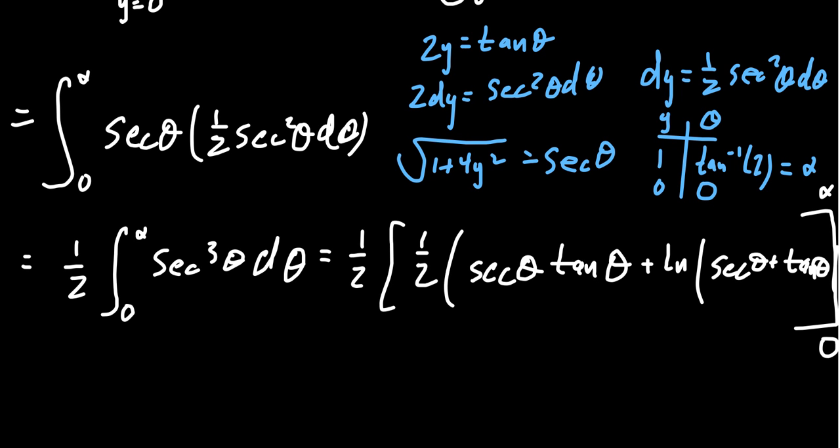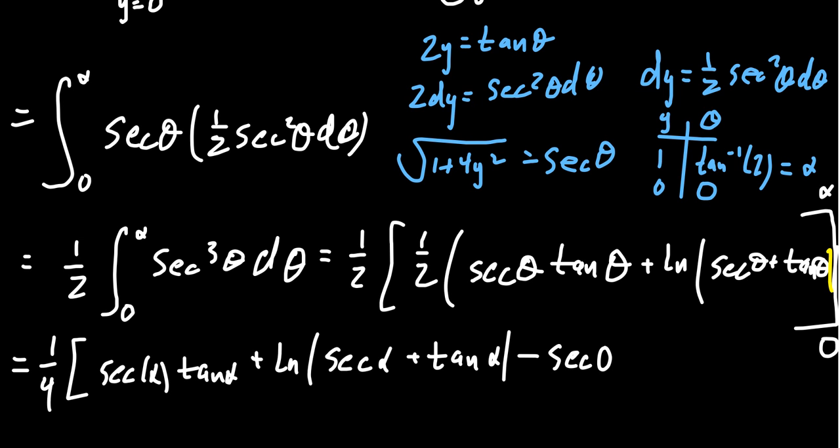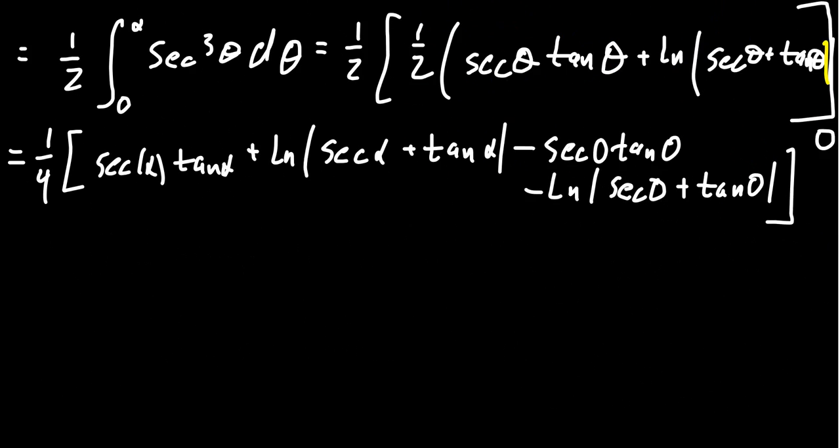And this will go from alpha to 0 right there. And there's an absolute value showing up right here. So the 1 halfs will combine to give us a 1 fourth. That's a coefficient that sits out in front. Let's stick these numbers in everywhere else. So, we're going to get secant of alpha times tangent of alpha. Then we're going to get the natural log of the absolute value of secant of alpha plus tangent of alpha. That's the first bit. Then we're going to subtract from this secant of 0 tangent of 0. Also, we need to subtract from this the natural log of the absolute value of secant 0 plus tangent of 0.